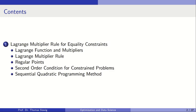We need the definition of regular points, as this is one assumption required for the Lagrange multiplier rule. We will also briefly consider a second order condition for constrained problems: the Lagrange multiplier rule is the first order necessary condition, and there is also a sufficient second order optimality condition. At the end we derive a numerical method called the sequential quadratic programming method.